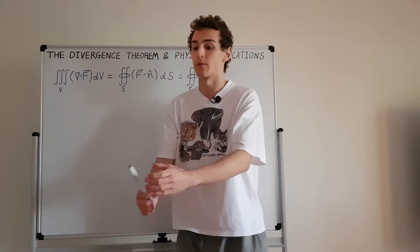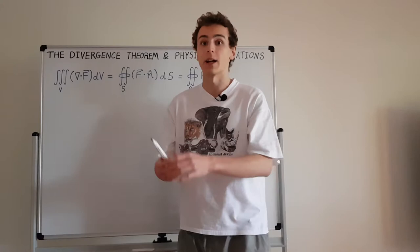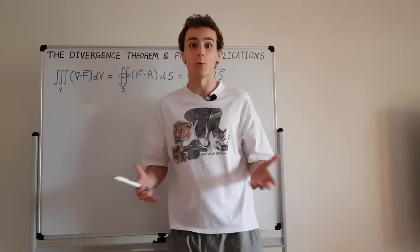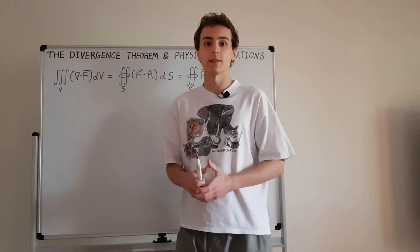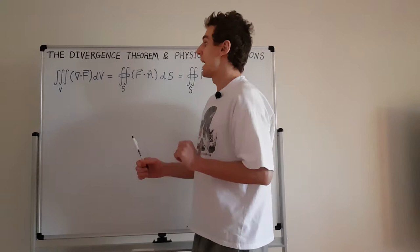Depending on which parameterization we use, we choose different coordinate systems. Some are more convenient depending on the symmetries in the system. If you have cylindrical symmetry — like a wire or column — use cylindrical coordinates. If you have spherical symmetry — like a planet — use spherical coordinates. Without that symmetry, Cartesian coordinates are often easiest, using traditional x, y, and z.